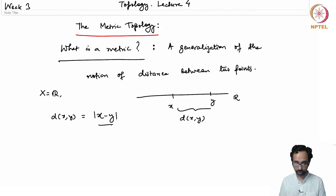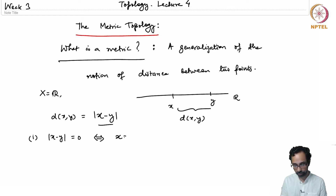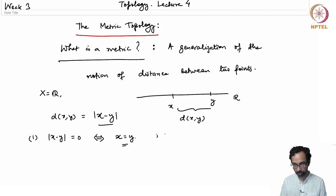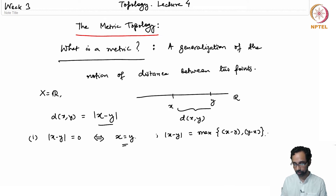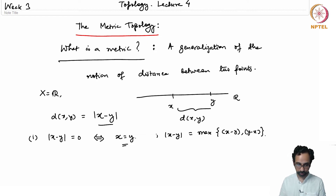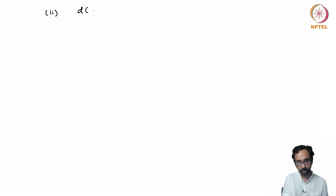There are some fundamental properties of this distance function. The first is that d(x,y) = 0 if and only if x = y. Of course if x = y then |x - x| = 0, and also if |x - y| = 0 then x = y, because |x - y| is the maximum of (x - y) and (y - x), so if this maximum is zero then x = y.